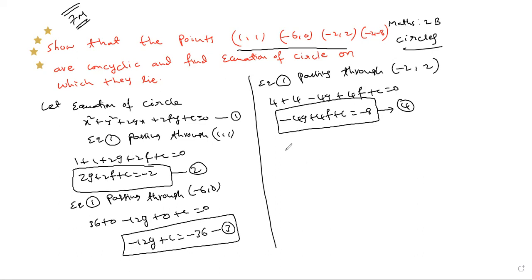Now solve equations 2 and 3 to find g and f. Taking equation 2: 2g + 2f + c = -2, and equation 3: -12g + c = -36. Subtracting, c cancels. 2g + 12g = 14g, and 2f remains. This gives 14g + 2f = 34.